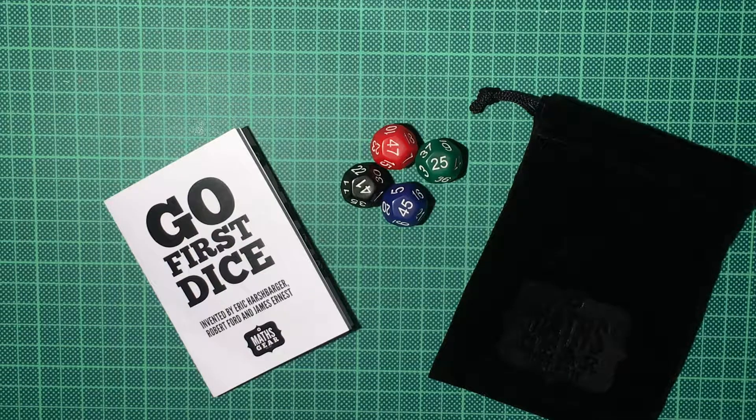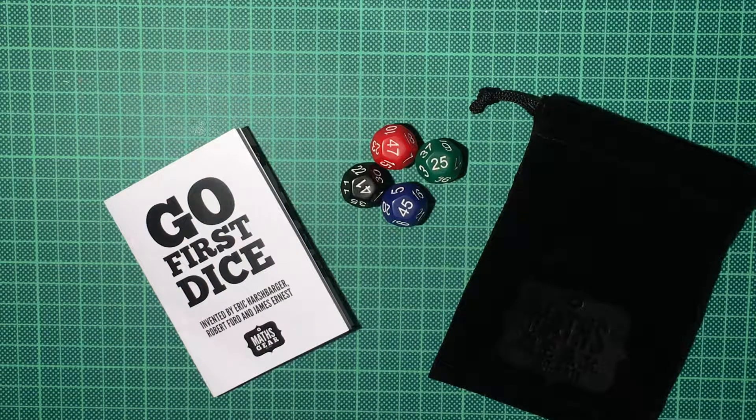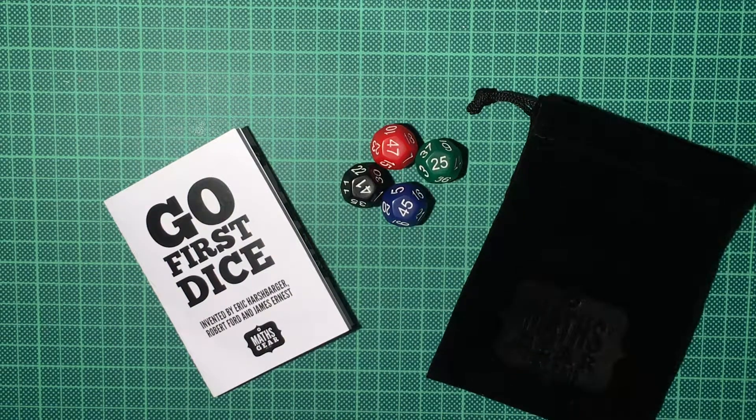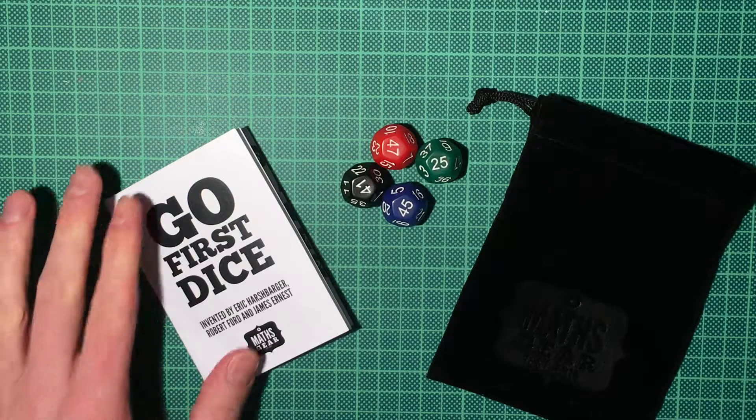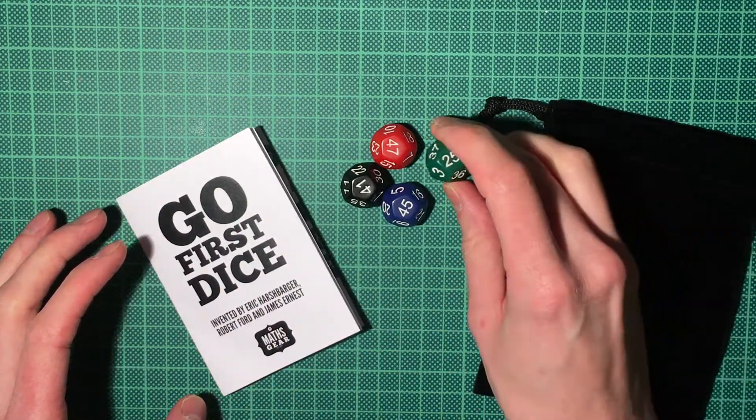Hello and welcome back. Today we have the second set of weird dice that I got from Maths Gear, and these are the Go First Dice. They are four 12-sided dice.